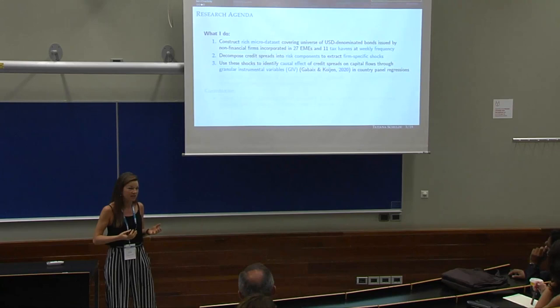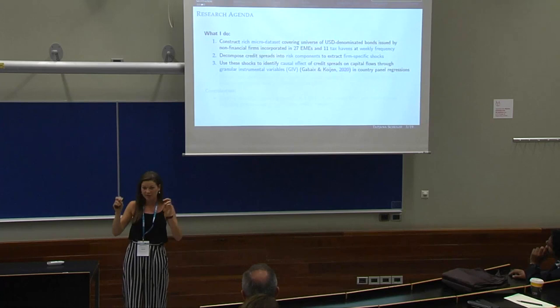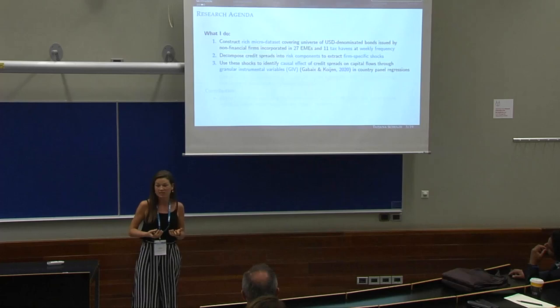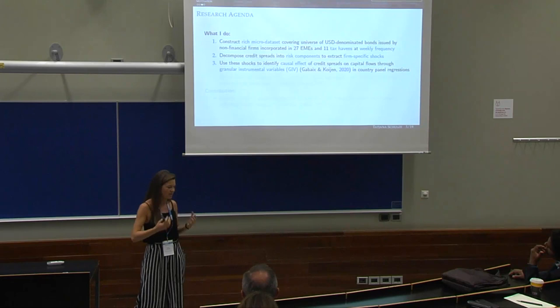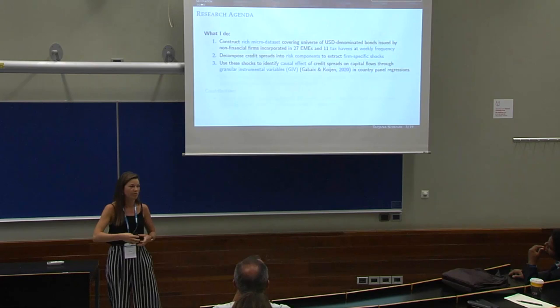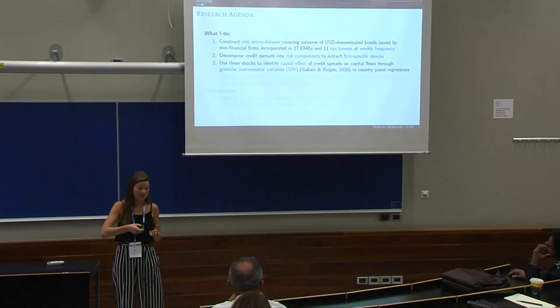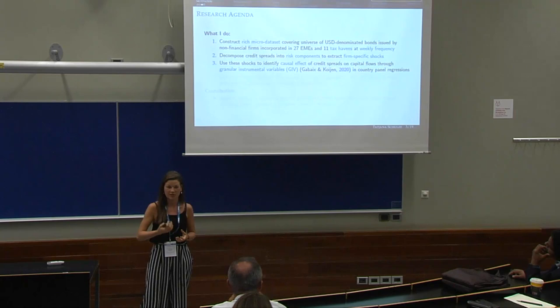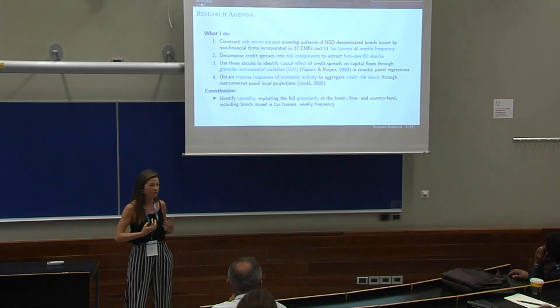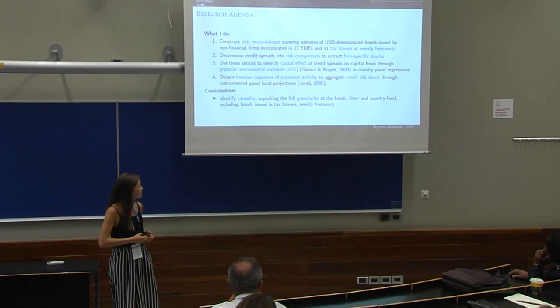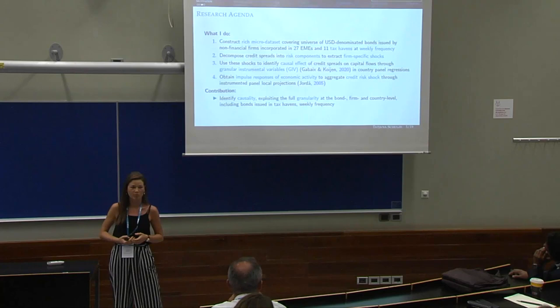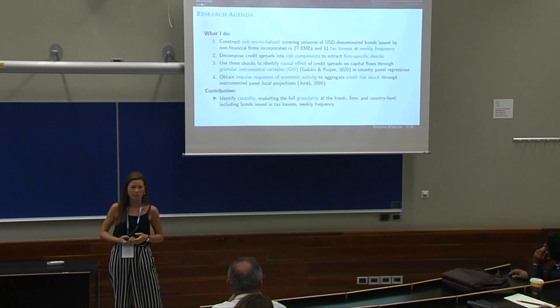I take the weekly time series of corporate spreads paid on these bonds and decompose them into their various risk components to extract idiosyncratic firm-specific shocks. I use these idiosyncratic shocks to construct granular instrumental variables, going back to the recent identification approach proposed by Gabaix and Koijen. The basic intuition is that shifts in the credit risk of particularly large players — such as large corporate borrowers in emerging markets — can affect macroeconomic outcomes in a meaningful way. The GIV summarizes variation in credit risk due to particularly large firms that cannot be explained by the average firm.